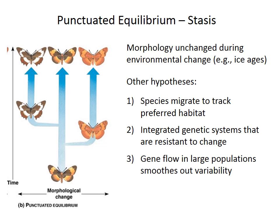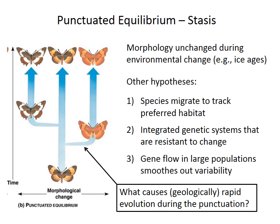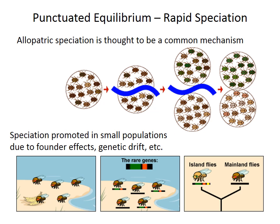That leads us to the second interesting question: what causes these geologically rapid evolutionary events during the punctuations? To answer that, you need to know a little about speciation — the evolution of a new descendant species from its ancestor. Speciation is a complicated subject, so I'll focus on just one mechanism relevant here, called allopatric speciation.